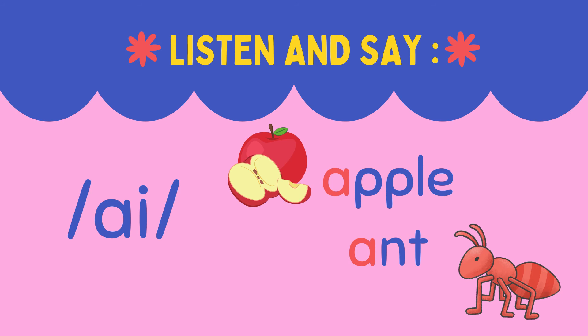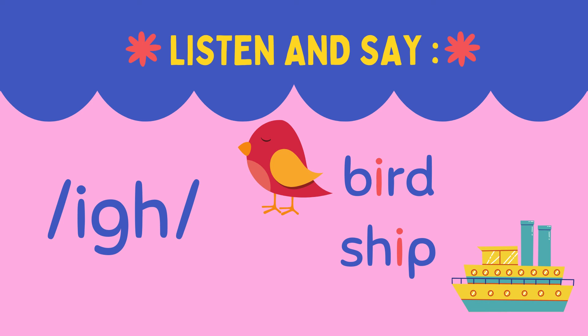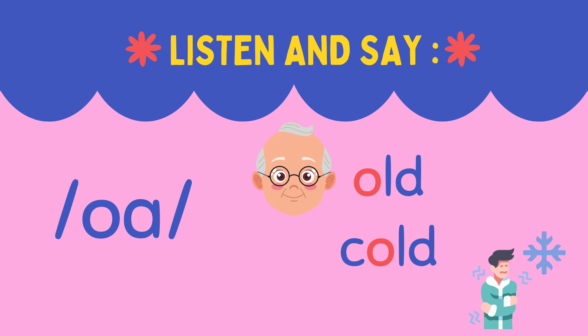The short A sound: apple, ant. The long E sound: tree, key. The short I sound: bird, ship. The O sound: old, cold.